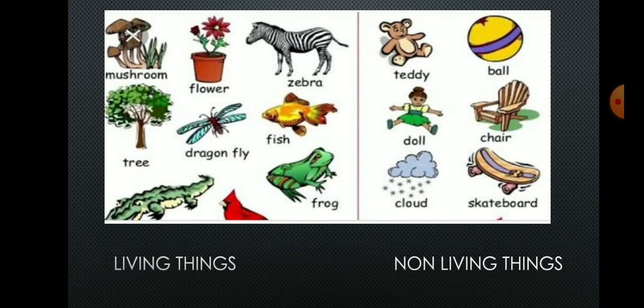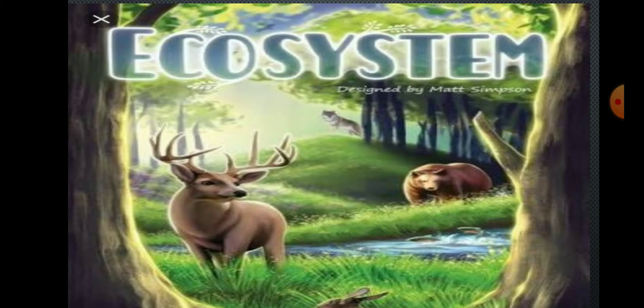Now what do you see in our surroundings? Living things and non-living things. Then what is an ecosystem? Ecosystem is a large community of living organisms such as plants, animals, and microbes in a particular area. The living and non-living factors are linked together through nutrient cycle and energy flow.